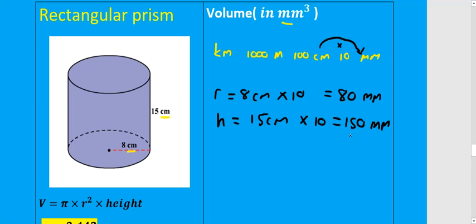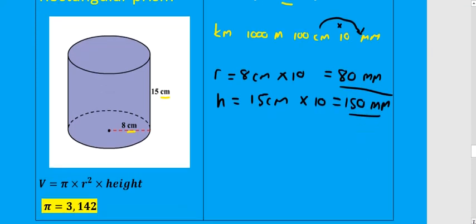Once we have our dimensions in millimeters, we can then substitute into the formula to calculate the volume of the cylinder. Volume equals pi, and we know the value of pi doesn't change. It's always 3.142 and will be given in the exam.